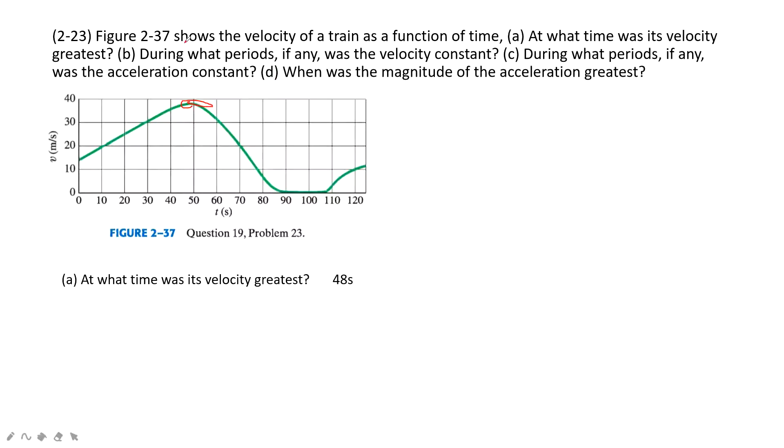The second one: during what periods was the velocity constant? So velocity constant on the V-t graph - it must be horizontal, this region. Yes, 88 to 118 seconds.